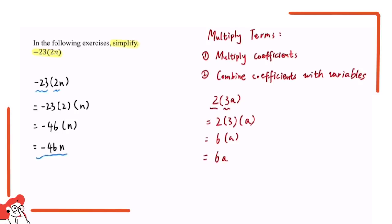That is the final answer for this question. Looking back at the whole process, the key takeaway is: whenever you are simplifying an expression with a constant value multiplied by a variable that has a coefficient, first get the final coefficient by multiplying the constant value with the coefficient of the variable. After that, combine that coefficient with the variable to get your final answer. That is basically how you solve a question like this.